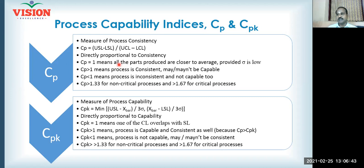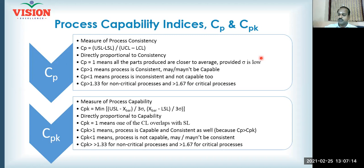There is an industry rule for when we can consider a process as consistent based on the CP value. When CP is more than one, it means the process is consistent, but may or may not be capable. For example, if CP is about 1.8, you can conclude the process is consistent since all parts are produced around the average, but even with a higher CP value your process can still be incapable.